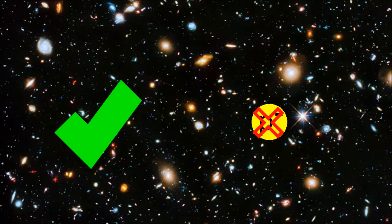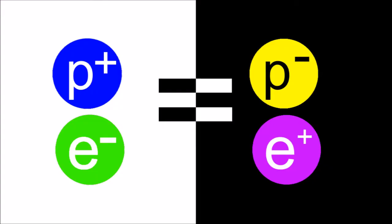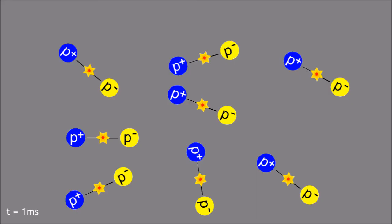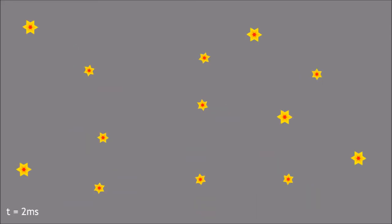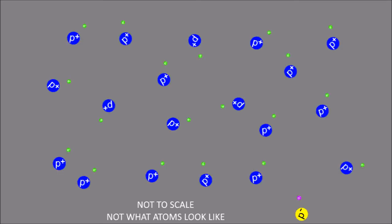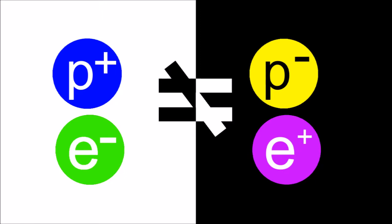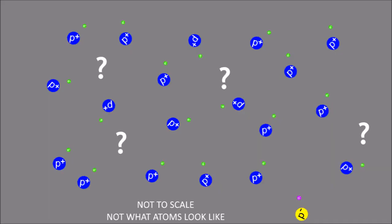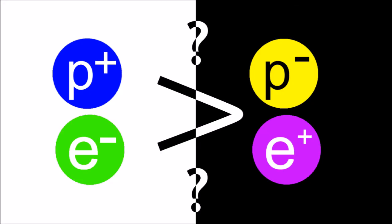Fortunately for us, antimatter is not prevalent in the universe. If antimatter was equal to matter, the universe would have become empty space mere milliseconds after the Big Bang. Clearly, as matter dominates the observable universe, that is not the case. But how antimatter became inferior in quantity is puzzling in every way possible. So how did the antimatter-to-matter asymmetry that allowed our existence happen?